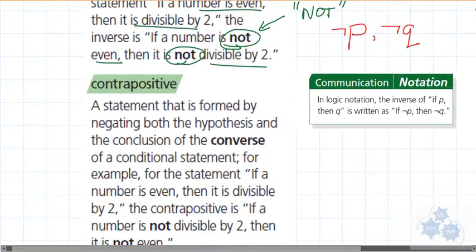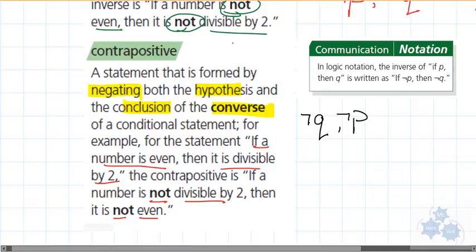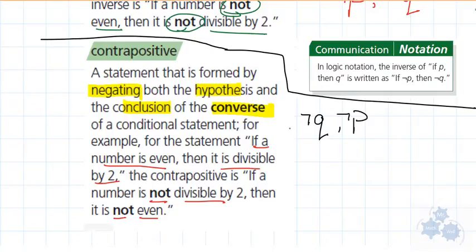So then we move on to the second thing we want to learn about today is the contrapositive. The contrapositive is a statement that's formed by negating both the hypothesis and the conclusion of the converse of a conditional statement. For example, if the statement is originally, if a number is even, then it's divisible by two. The contrapositive is, if a number is not divisible by two, then it's not even. So for the contrapositive, we negate the hypothesis and the conclusion of the converse. That's for the contrapositive. So, what you want to remember there is it's Q first and then P and then it's not Q, not P. So we flip the hypothesis and conclusion just like we do for the converse and then we negate both of them.